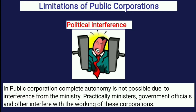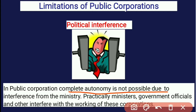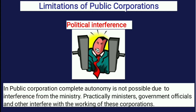Next limitation is political interference. In public corporations, complete autonomy is not possible due to interference from the concerned ministry. Practically, ministers, government officials, and others interfere with the working of these corporations, making full autonomy in the activities of public corporations not possible.